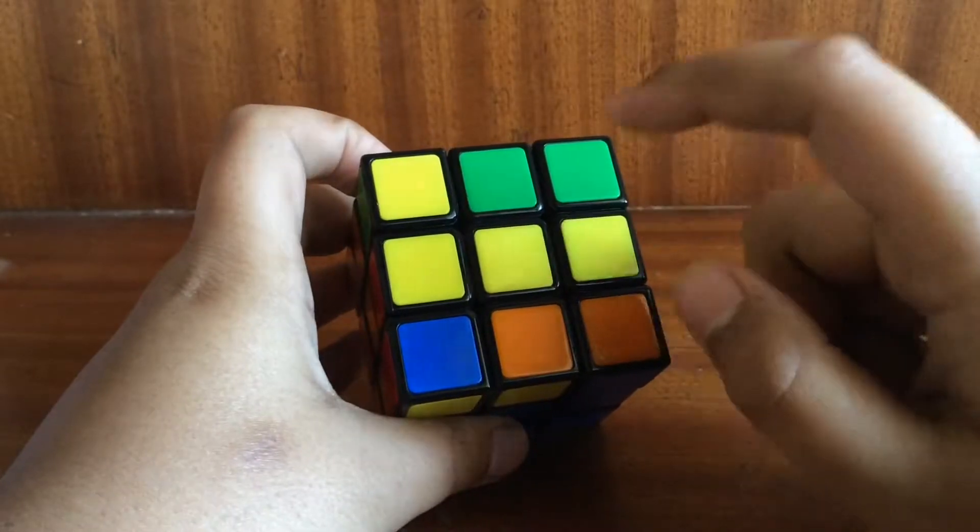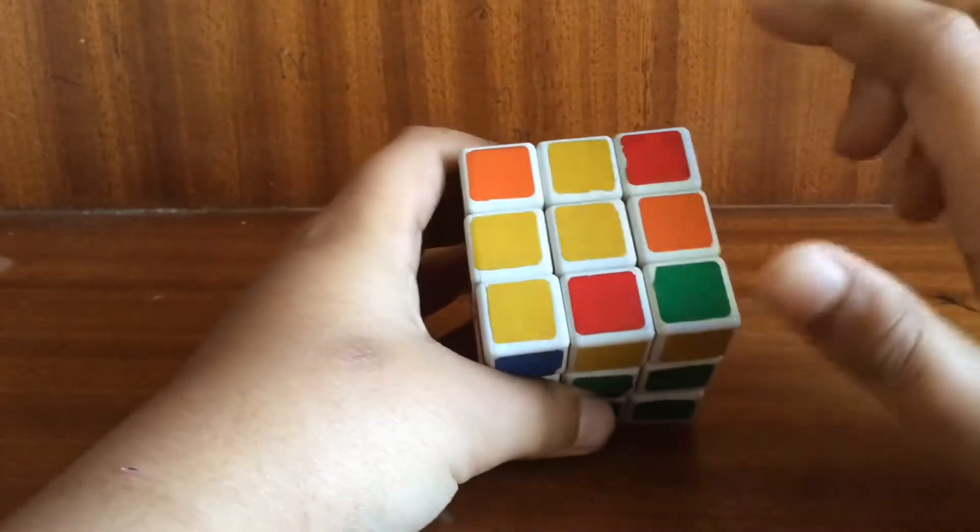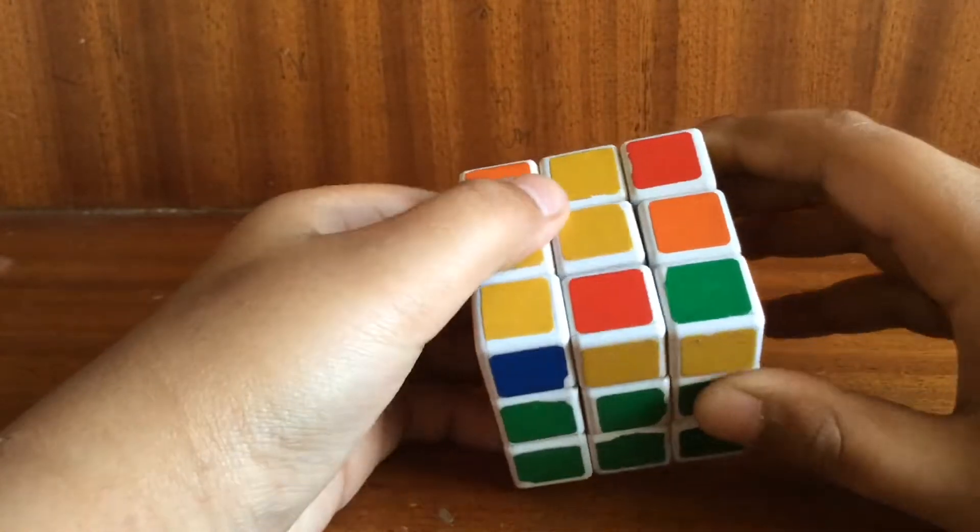So here I got the horizontal bar. If your cube is like this with a V, then do the same steps what you did for the center piece one. Let me show you again.